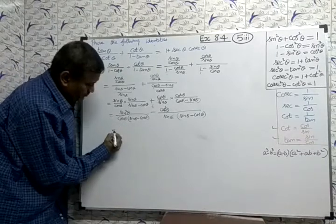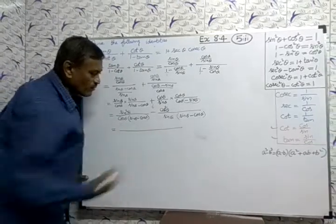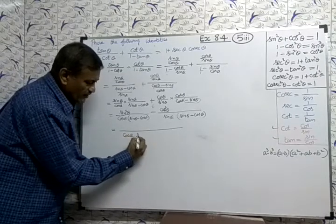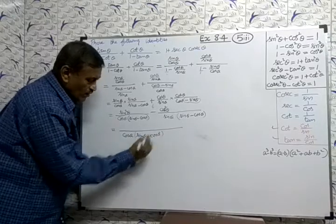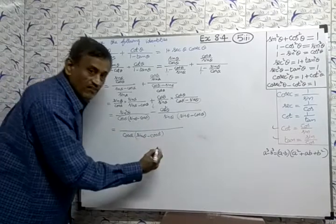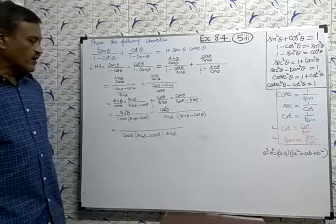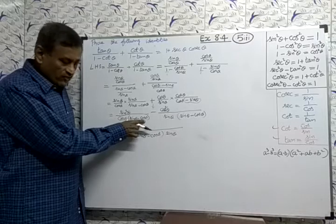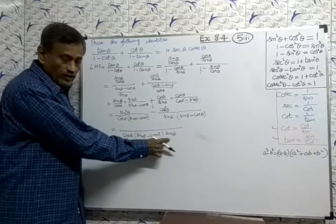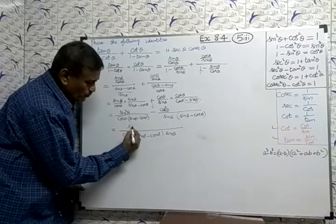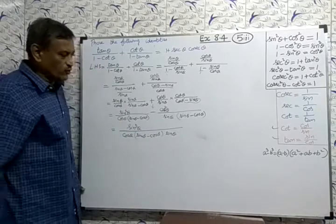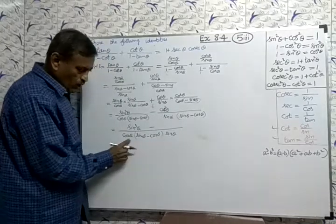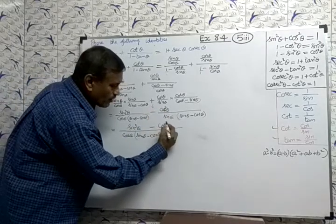Now I am going to take the common LCM for both fractions. The LCM will be: cos theta, sin theta, and (sine theta minus cos theta). In the numerator of the first term, multiplying gives sine cube theta. In the second term, we already have cos square theta, multiplying by cos theta gives cos cube theta.